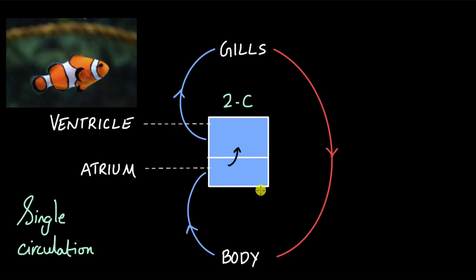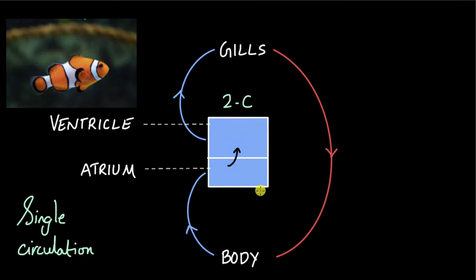We can wonder whether this single circulation would work for amphibians or reptiles. A reptile or an amphibian is considered to be a more active organism than a fish because it has a far more developed nervous system — it needs to crawl, jump, and sneak, carrying out many more activities. So the cells of a reptile or amphibian need energy at a much faster rate, meaning the metabolic rate of a reptile or amphibian is more than that of a fish.